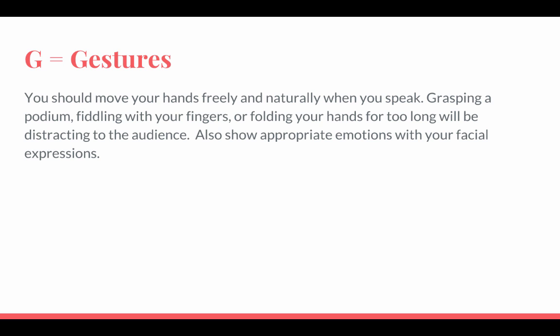G is for gestures — these are your hand movements. You should move your hands freely and naturally when you speak. Grasping onto a podium, which is why we won't use one, or fiddling with your fingers or folding your hands too long can be distracting to the audience. Gestures also include facial expressions. You don't want to be smiling during a sad part or scowling during a funny part — you want to show appropriate emotions with your facial expressions.